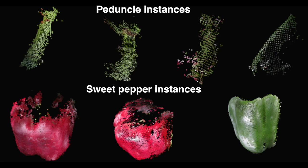Here we show instances of red and green sweet peppers. We manually annotated and split them into sweet pepper and peduncle datasets using the MeshLab application. As you can see, there is significant noise in measurements due to the small scale of objects and reconstruction error.